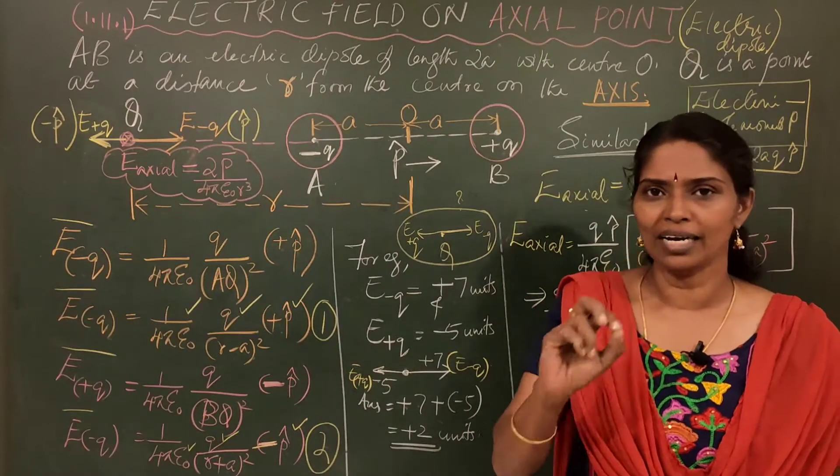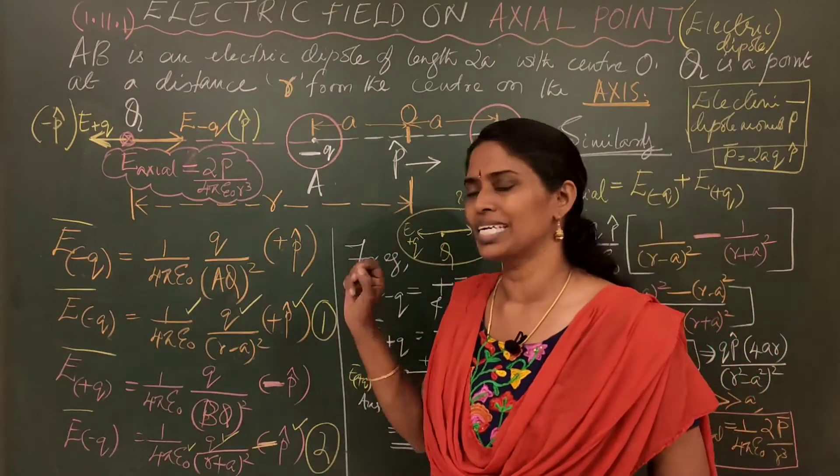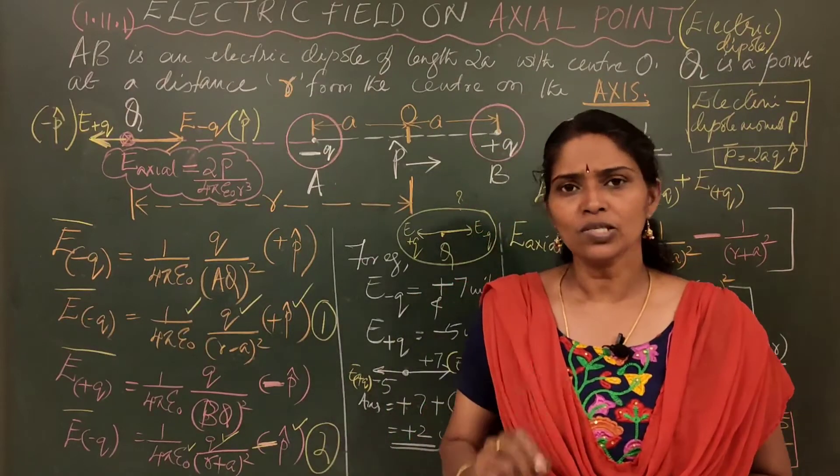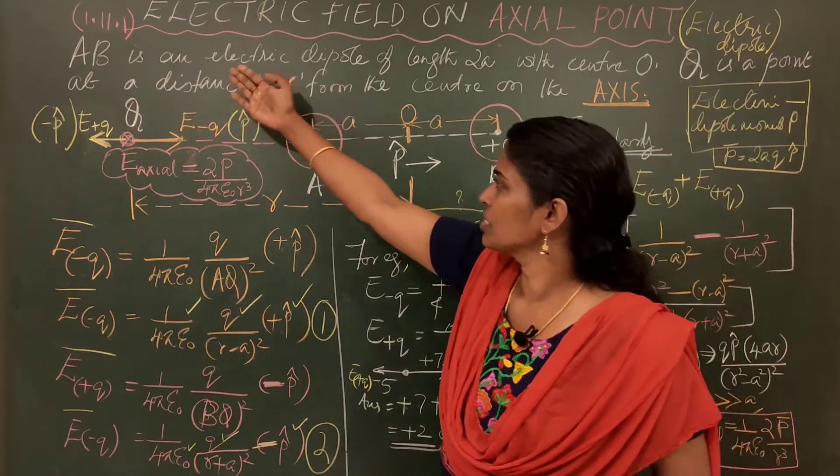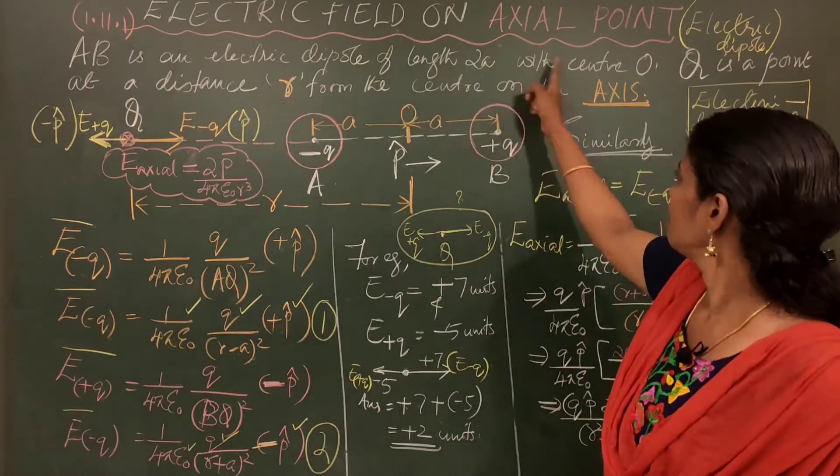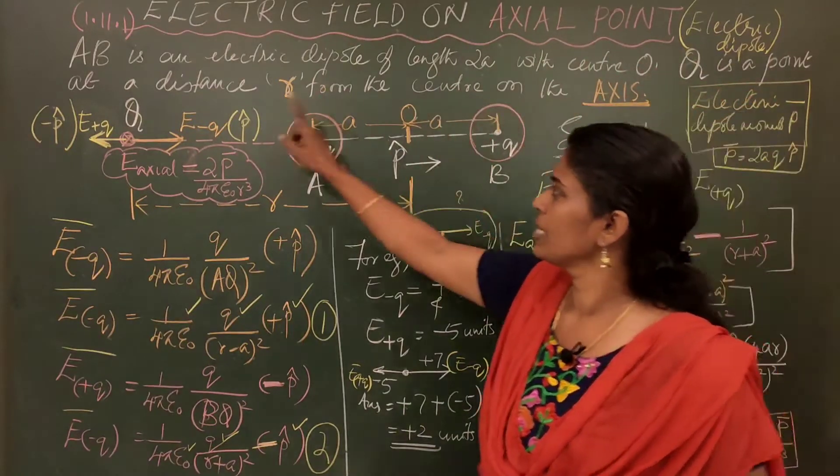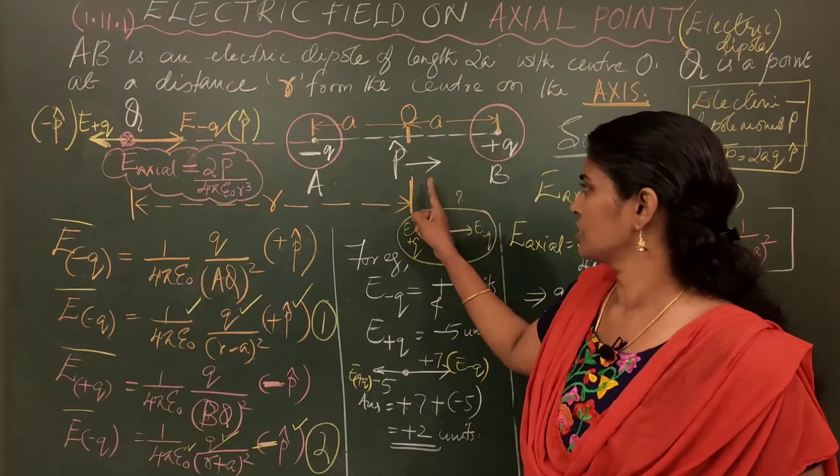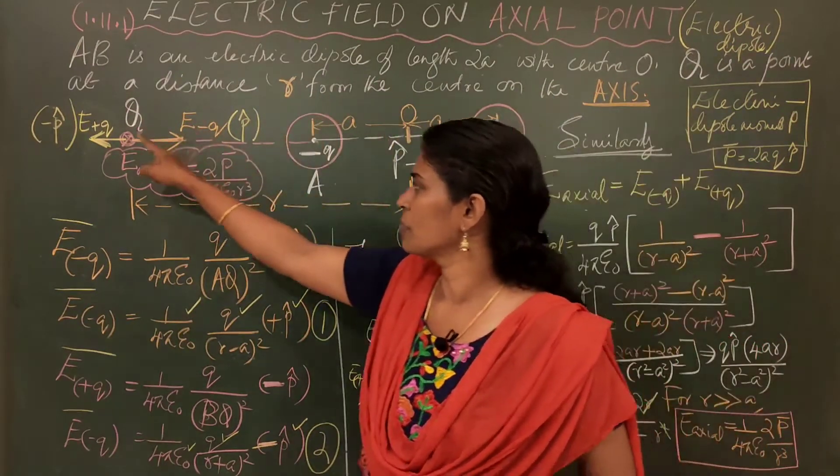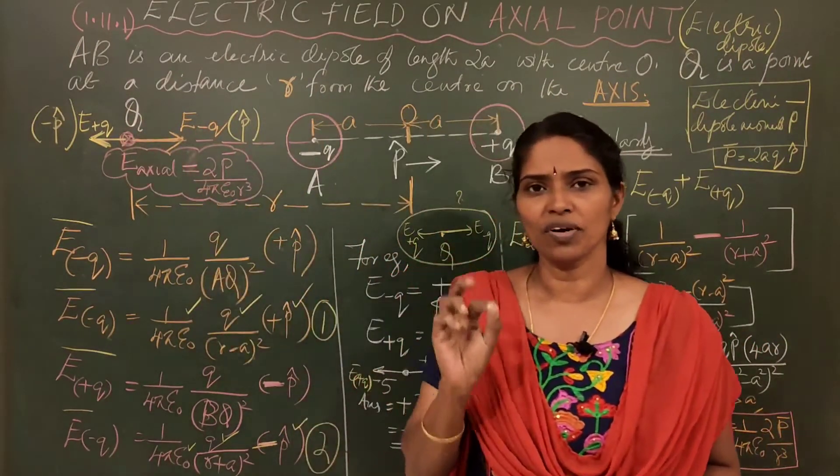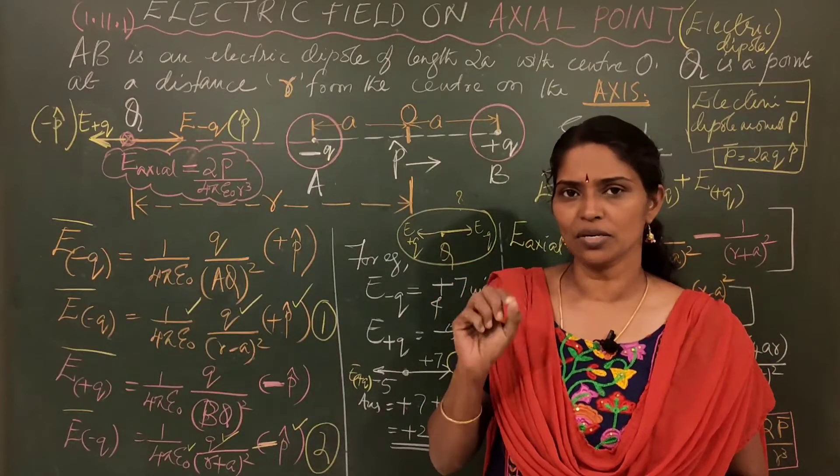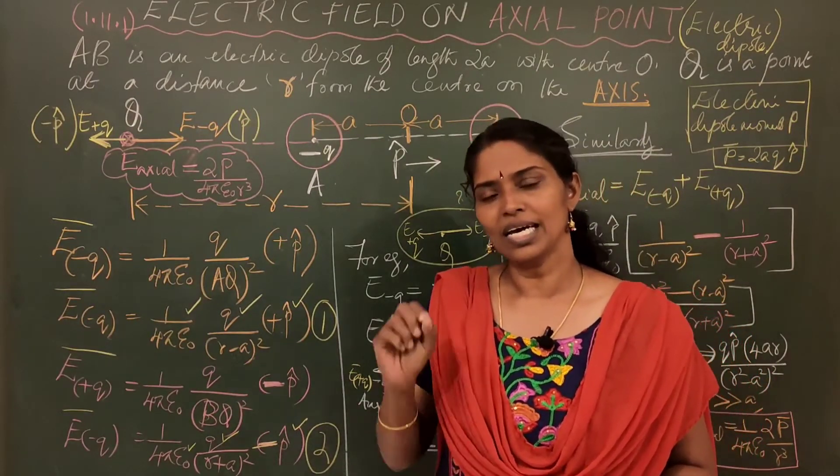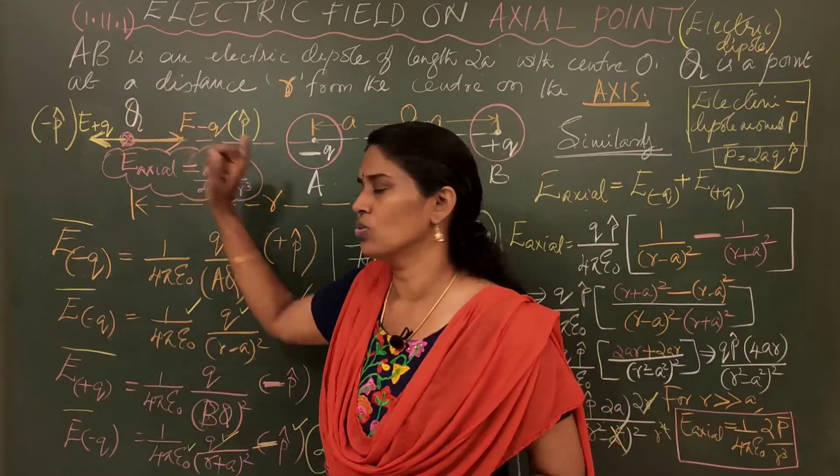These two informations are mandatory for us to listen to this particular topic. So, let us see, we have an electric dipole of length 2A with the center O. Q is a point at a distance R from the center on the axis. This is the center. This is the point Q where you have to find the electric field. So, that is the question. Question is find the electric field at the point Q.